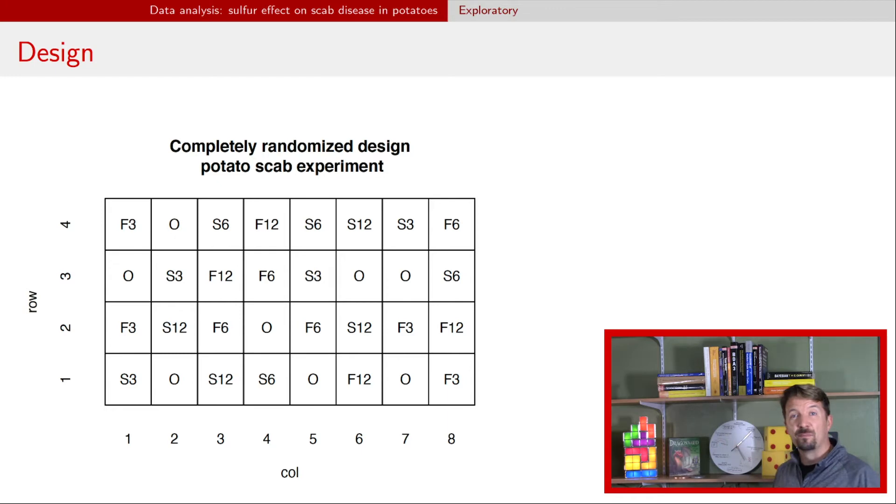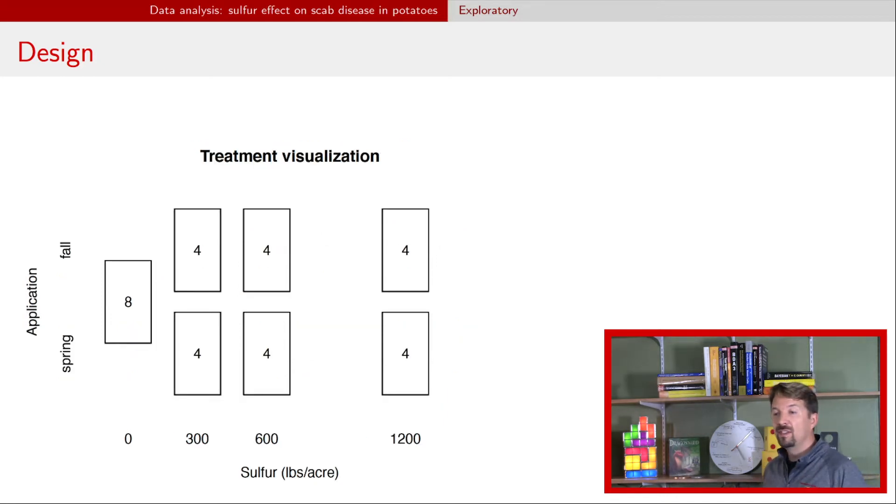So here is a depiction of the experimental design of the experiment. Apparently there was a field of four rows and eight columns, 32 total fields that we can actually do the experiment on. And then we randomly assigned all the different combinations, such that every combination is represented four times. In reality, that really just means that there were eight observations where there was no sulfur added at all.